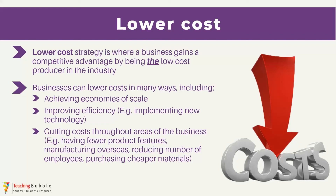Businesses can achieve this in a whole number of different ways. For example, they could achieve economies of scale by operating on a large scale in large volumes, which improves the efficiency of the business and reduces the cost per unit produced. The business could also improve efficiency throughout the business by implementing technological advancements that improve the speed of production.